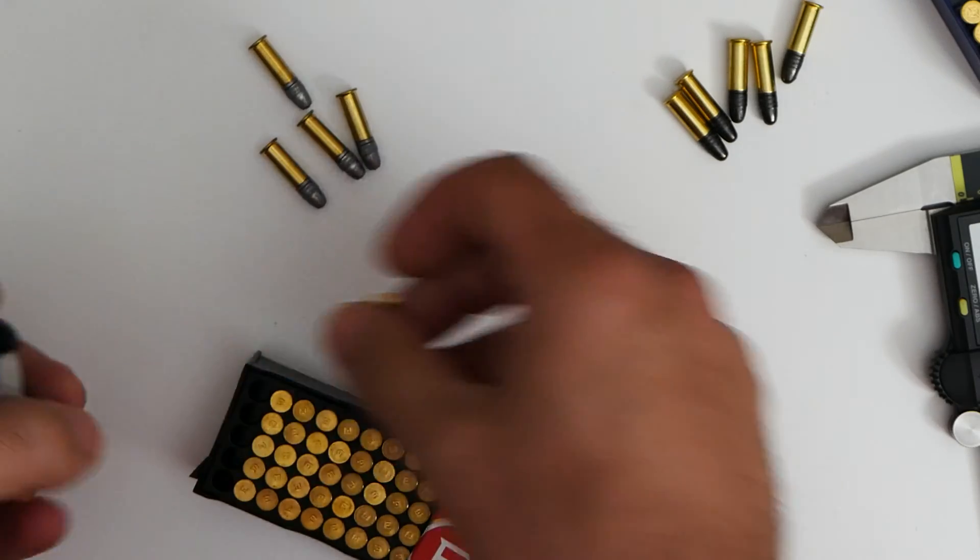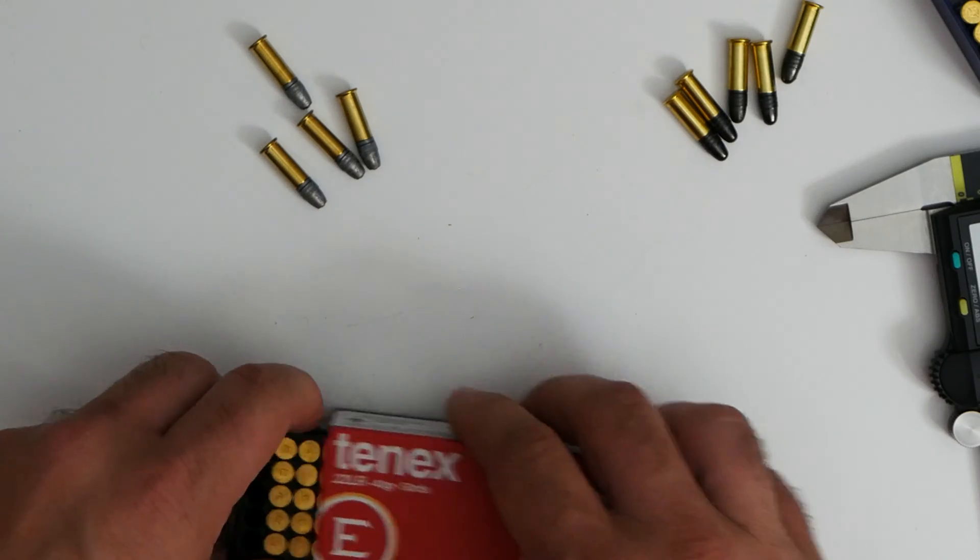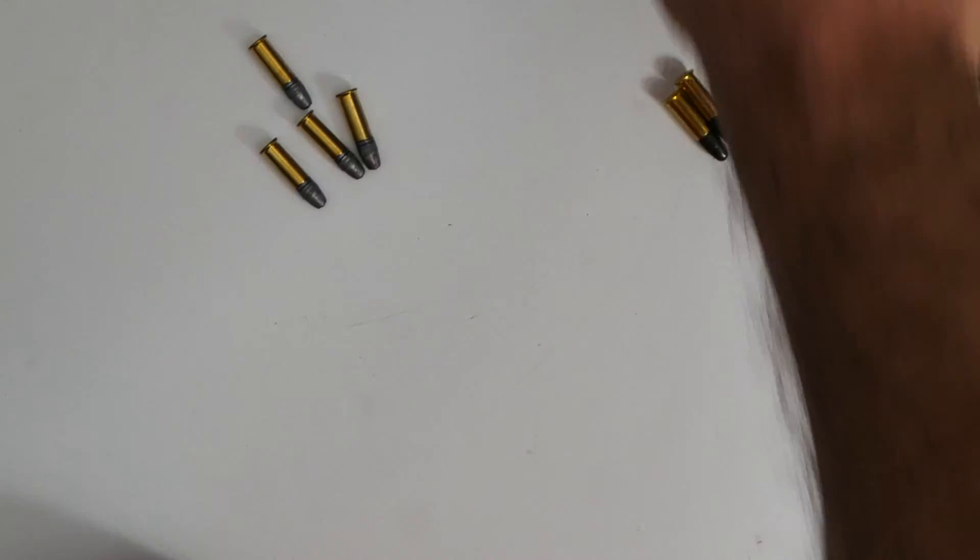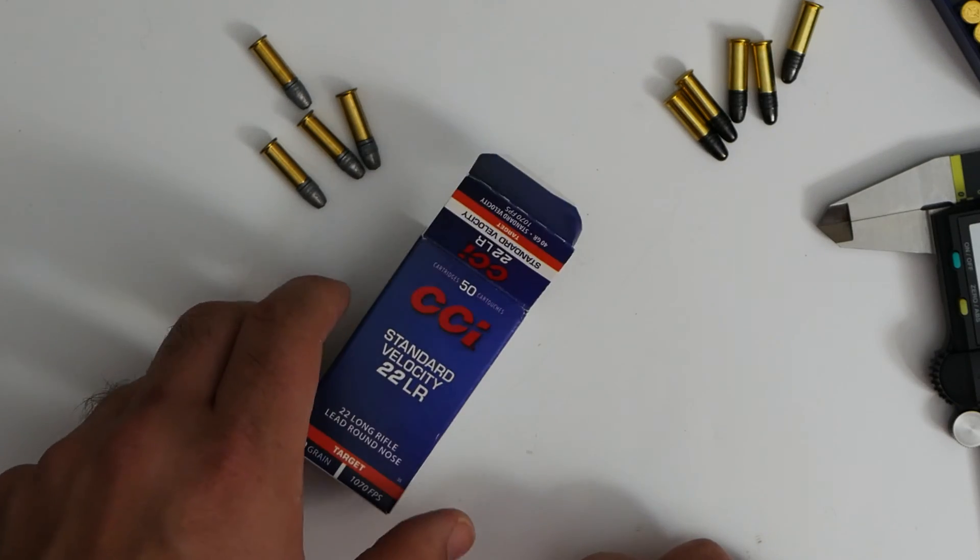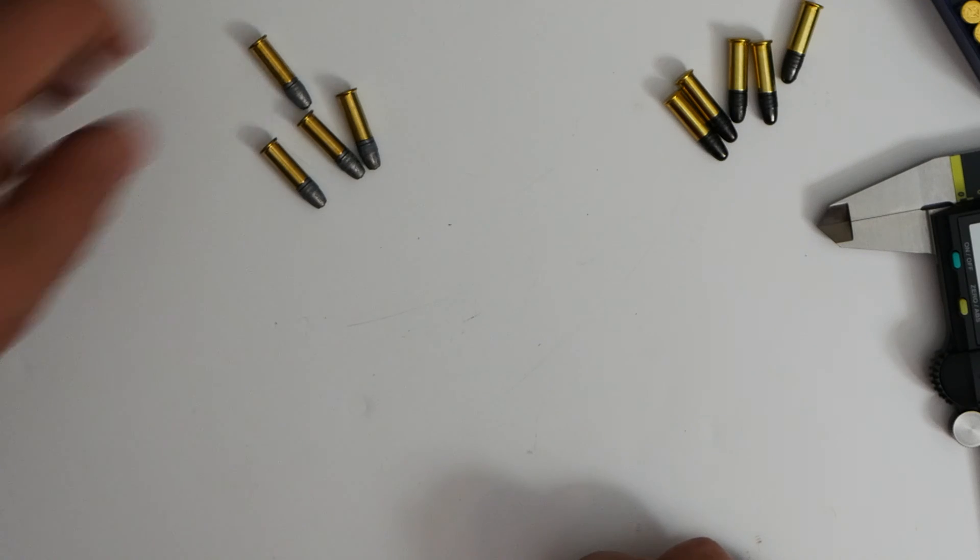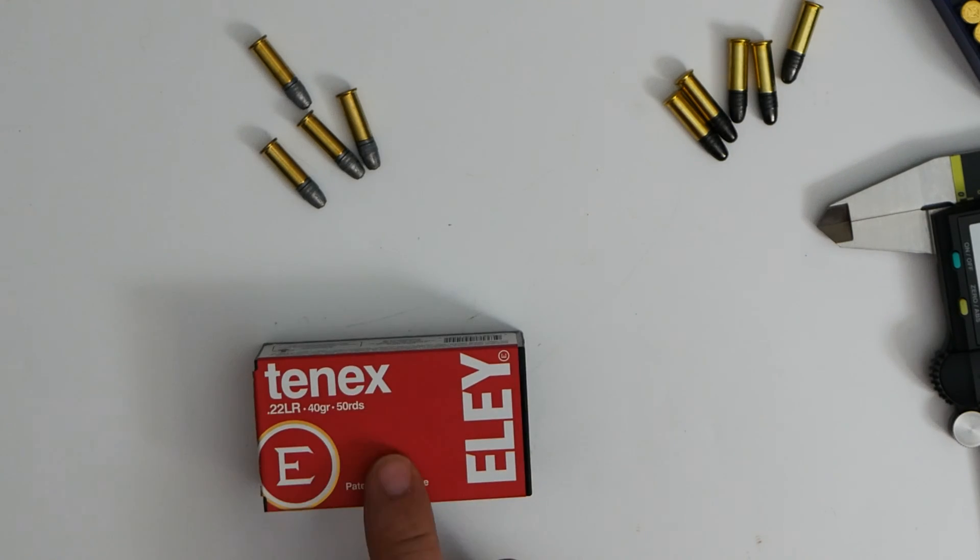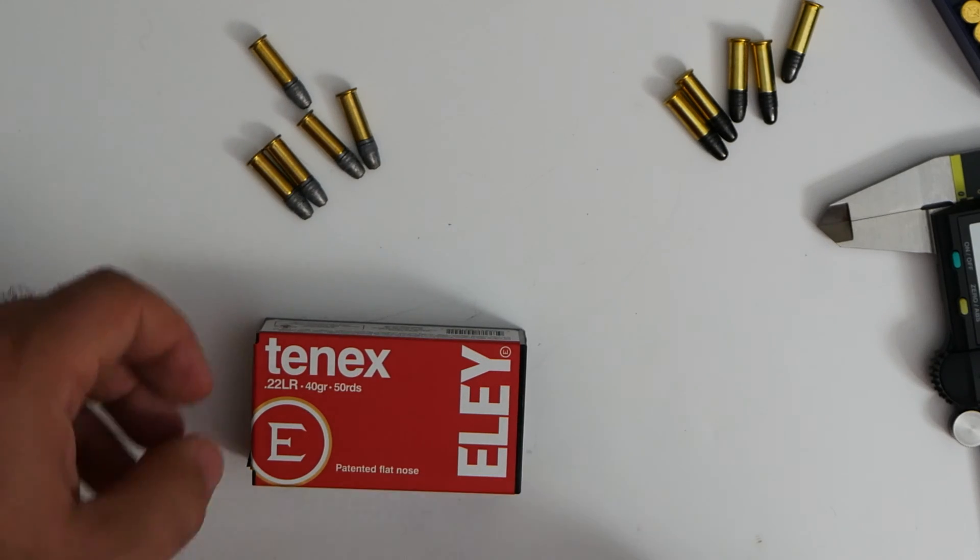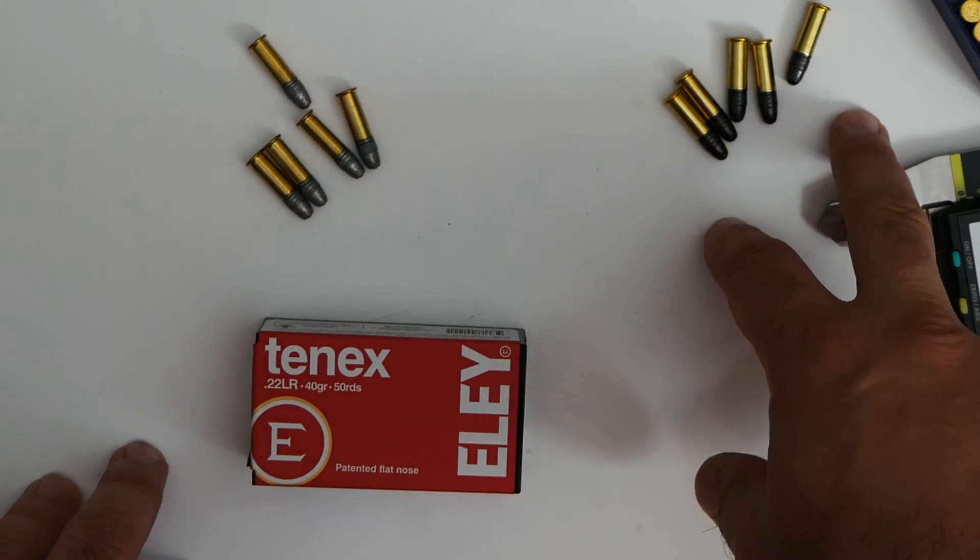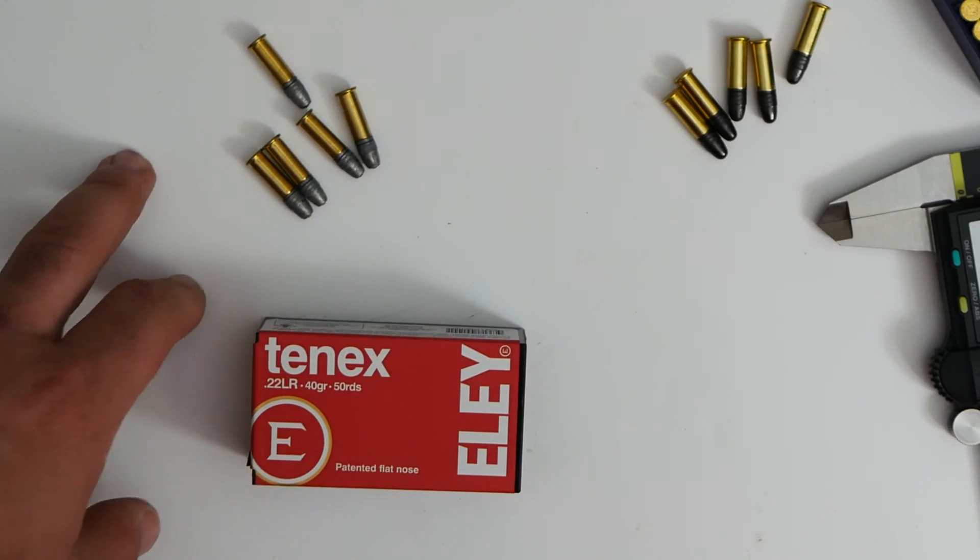So I found that Lapua tends to be around 42 and a half to 43 thousandths. CCI tends to be around that 41 thousandths to 42 thousandths. And Ely is, Ely rifle ammo is pretty consistently 39 thousandths. I found that Ely pistol ammo tends towards that 38 thousandths. So depending on what you're using. And yes, you can use 22LR pistol rounds in a rifle. So that gives us a pretty interesting spread between Lapua being the thickest, CCI somewhere in the middle, 10X being the thinnest.